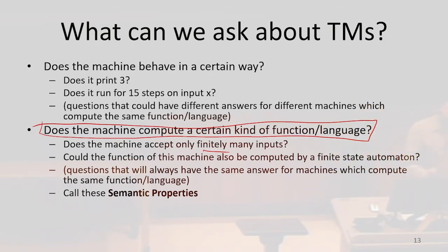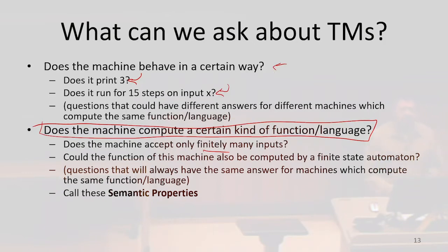On the other hand, we could also ask questions like: does the program print 3, or does it run for 15 steps, or does it accept within 15 steps? These are questions about the implementation of the machine rather than what function it computes. The questions we've been asking — about the function or language of that machine — we call these semantic properties.